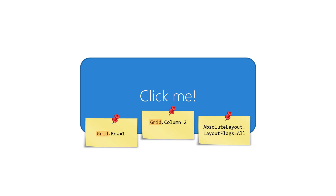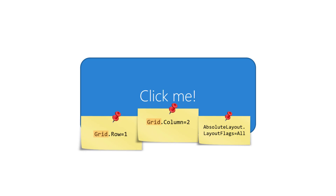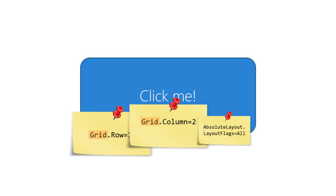Here we have a button with three attached properties. You can think of attaching a property as adding a key value pair into a collection. The act of attaching a value doesn't impact the behavior of the object directly — the key value pair just sits in the collection doing nothing until someone comes along and reads the value. When this button is in a grid, the grid attached properties become relevant. During layout, the grid will look at the button's key value collection to see if there are any grid attached properties there. If there are, the grid reads the values and uses them to determine the child position. If not, the grid uses the default values of row and column zero. The grid ignores any other attached property settings since they're not relevant to it.